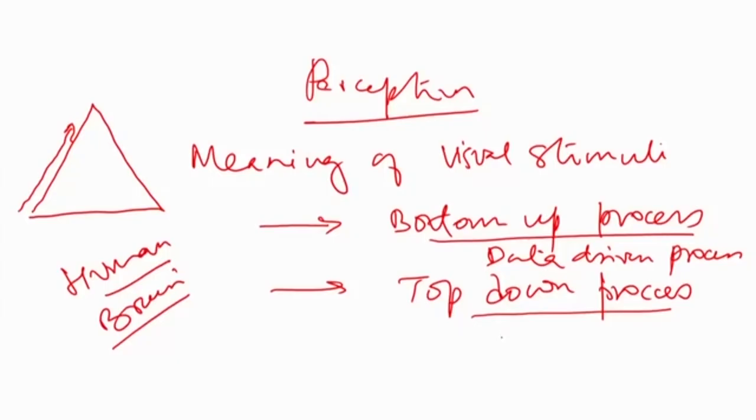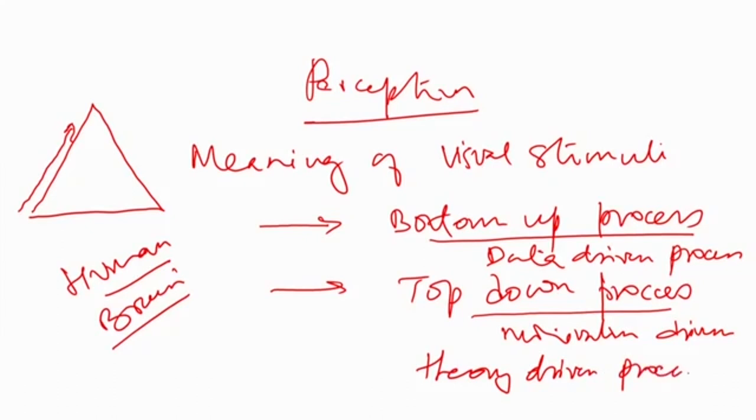In contrast, the top-down processes are generally motivation-driven or theory-driven processes, meaning they move from specific to general. Most perception requires both the top-down process and the bottom-up process. So the next thing we are going to understand in this lecture is the bottom-up process and the top-down process.